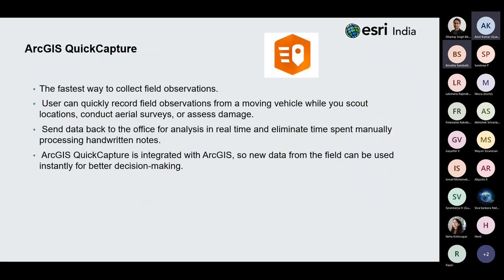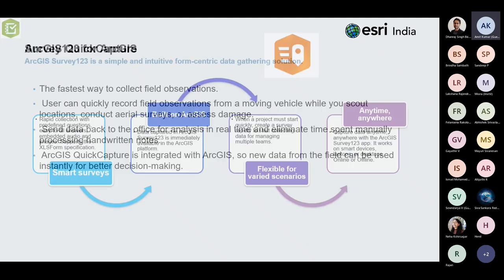ArcGIS QuickCapture is the fastest mobile app for collecting field observations. With a simple interface, you can quickly record field observations from a moving vehicle, while scouting locations, conducting aerial surveys, or assessing damages. Data is sent back to the office for analysis in real time, and is integrated with ArcGIS so collected data is used instantly for better decision making.